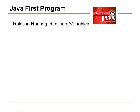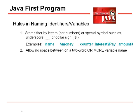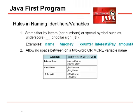What are the rules in naming our variables or identifiers? We should start either with letters — not numbers — or special symbols such as underscore or dollar sign. Examples are: name, $money, _counter, interestToPay, amount3. We do not allow spaces between two-word or more variable names. For example, 'interest rate' should have no space in between.